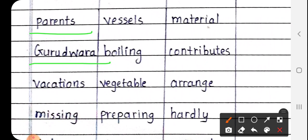Gurudwara, G-U-R-U-D-W-A-R-A. Gurudwara means where we go to worship. Jahaan par jaate hai us place ko kya kehte hai Gurudwara kehte hai. Next vacation, vacation means chhuttiya.